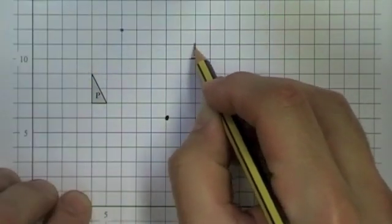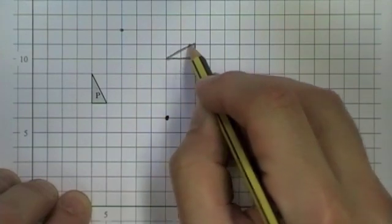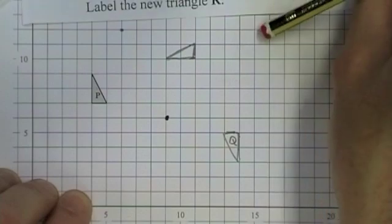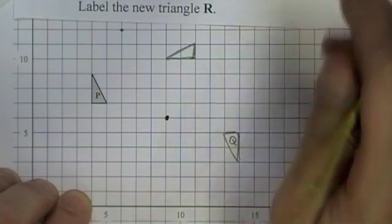So that is going to be my triangle and it says in the question label the new triangle R.